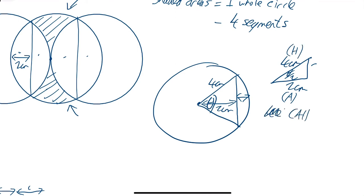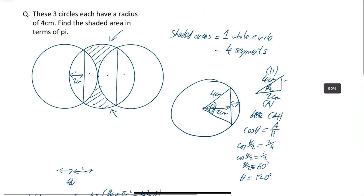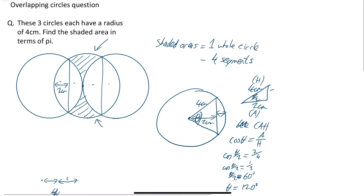Cos CAH. So cos theta is equal to CAH is adjacent over hypotenuse. Which means cos, our angle is actually theta over 2, is equal to 2 over 4. So cos theta over 2 is equal to 1/2. You should know that cos is equal to 1/2 when the angle is equal to 60 degrees. And then that means theta itself is 120 degrees. So we've now got theta is 120 degrees.